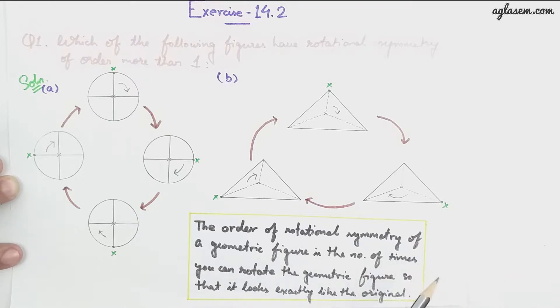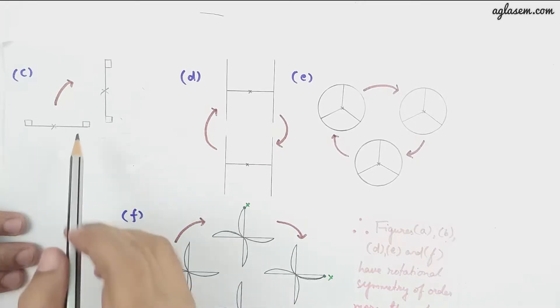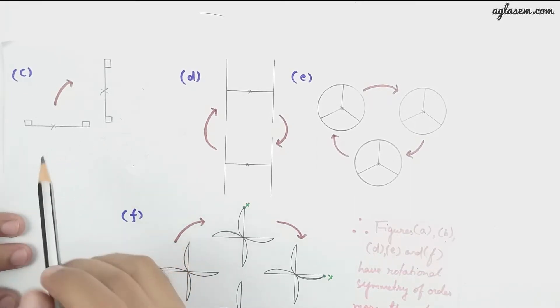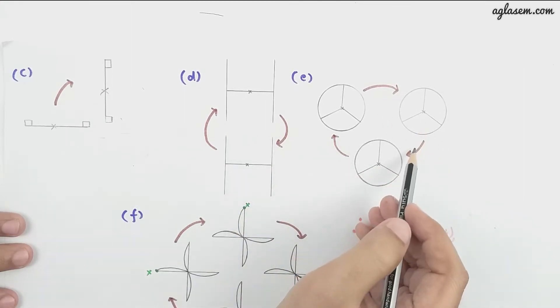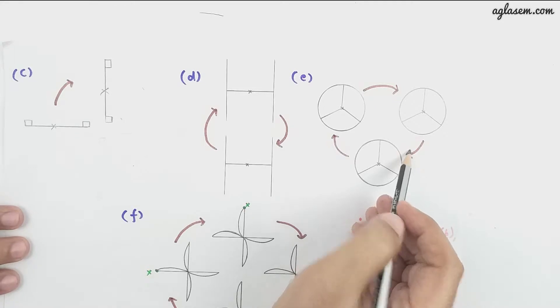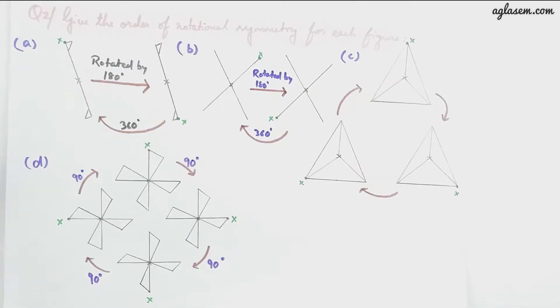So the order of rotational symmetry of a geometric figure is the number of times you can rotate the geometric figure so that it looks exactly like the original one. Moving to part C, we have only one symmetry here. In part D we can see we have two. In part E we have three. In part F we have four. So accordingly, the answer is A, B, D, E, and F have rotational symmetry more than one.